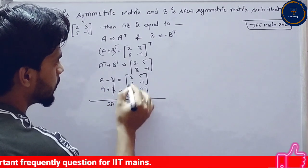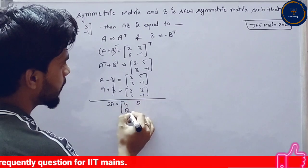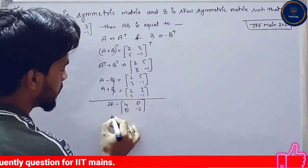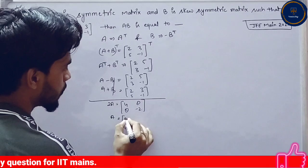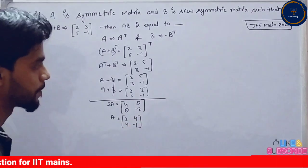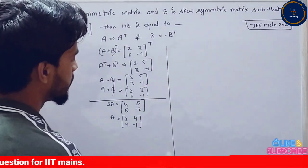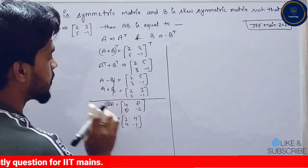Basically, 2A is equal to [2+2, 4+4; 8, -2], which gives 2A equals [4, 8; 8, -2]. What will be the value of A here? A equals [2, 4; 4, -1]. If we have A, then what is B?